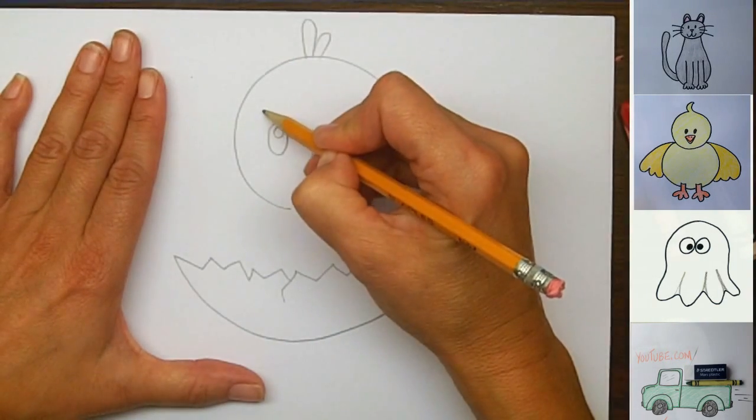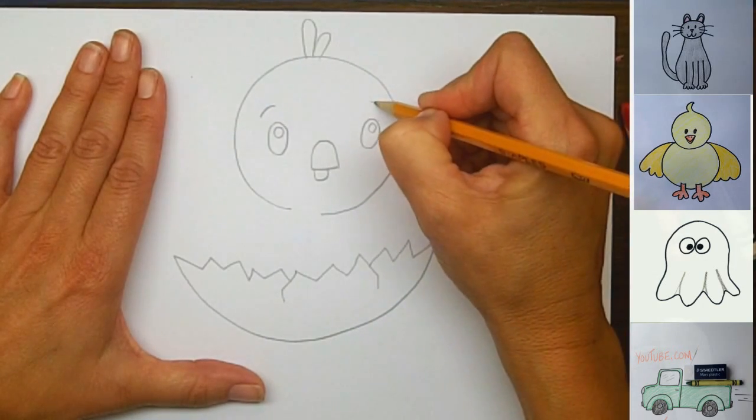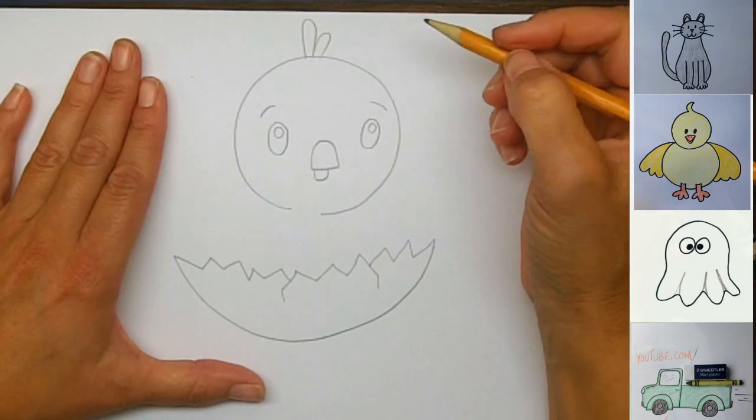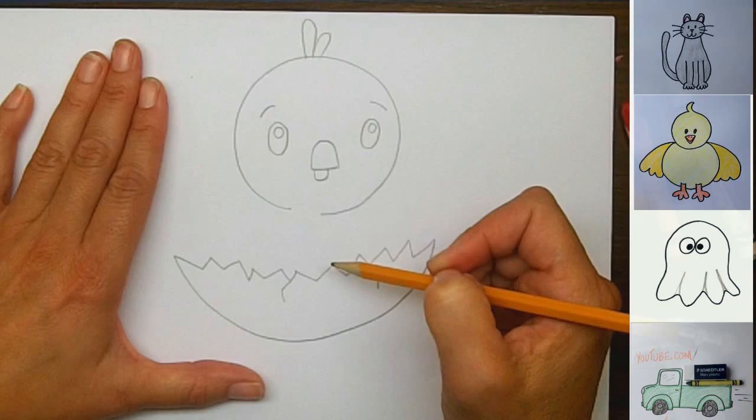And then we'll draw little eyebrows, because he's so curious. He was just born, and he's looking up in the air. Maybe he's looking for his mama bird.